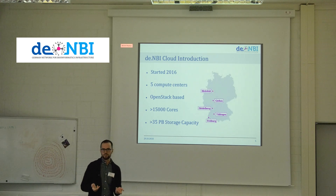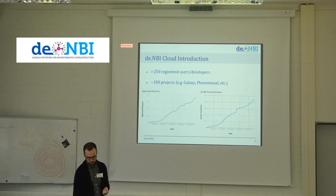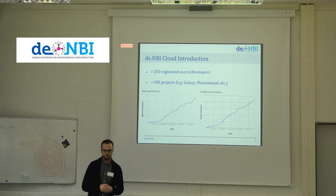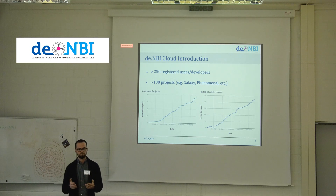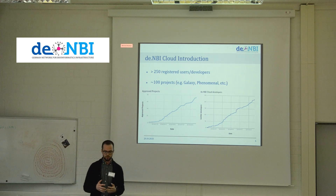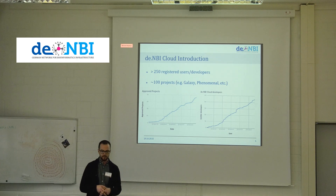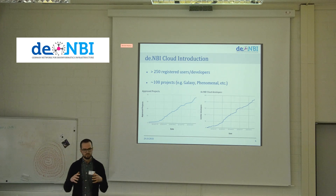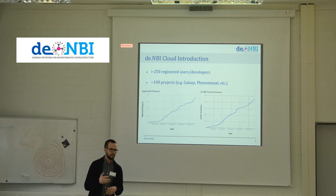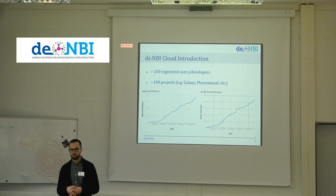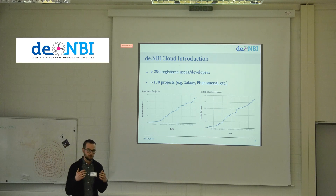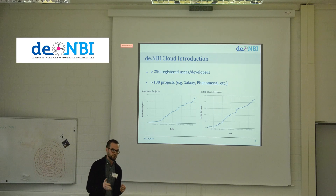Even though we started at the end of 2017, we have a growing number of users, developers, and projects. At the moment we have more than 250 registered users and about 100 projects. Among those projects are also science gateway projects like Galaxy or Phenomenal, with hundreds and thousands of users actually using de.NBI Cloud resources behind the scenes.